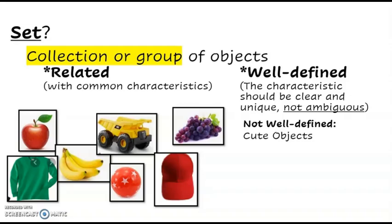Example, the set of cute objects. This set is not well defined because what is cute to me might not be cute to other people. The set of delicious fruits is not well defined because of the word delicious. This word is based on opinion.